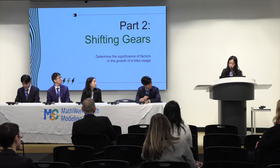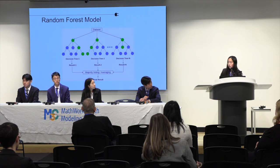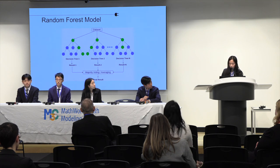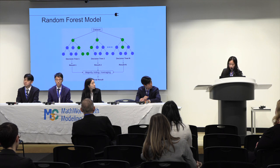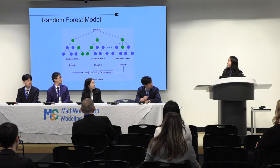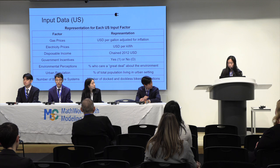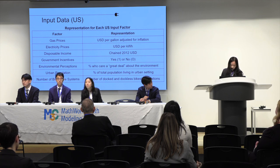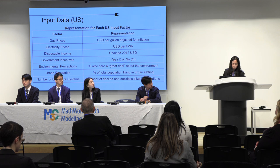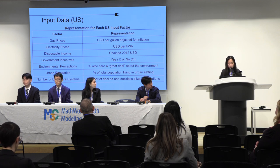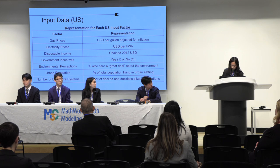In part two, we rank the importance of several factors in determining the growth in e-bike sales. To do this, we use the random forest model to predict e-bike sales with our chosen factors. Random forest models train multiple decision trees on random samples of the data and combine the results through averaging, as shown in the diagram here. We selected seven factors likely to influence e-bike sales: gas prices, electricity prices, disposable income, government incentives, environmental perceptions, urban population, and the number of bike share systems.